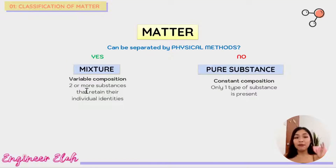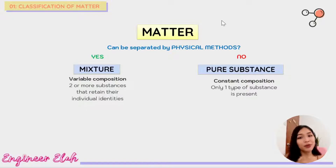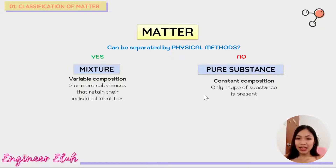By definition, a mixture is two or more substances that retain their individual identities, meaning you can still separate them. But a pure substance has a constant composition and only one type of substance is present. So for now, let's focus on mixtures.